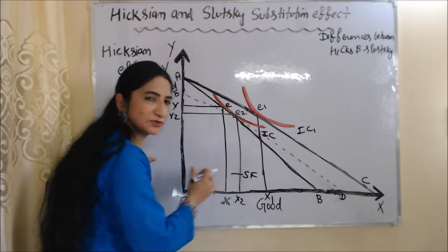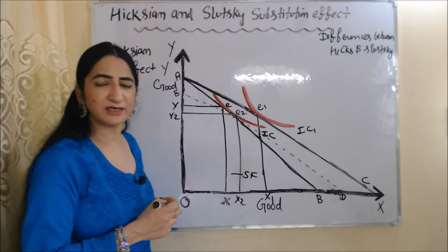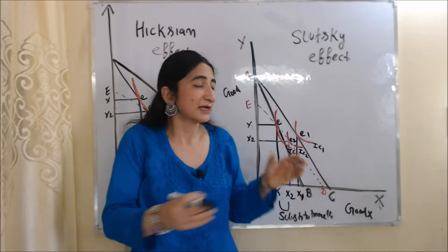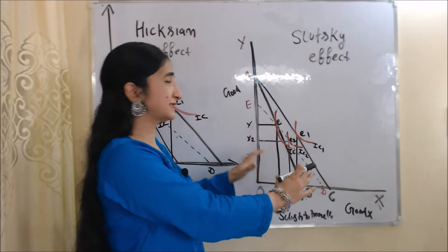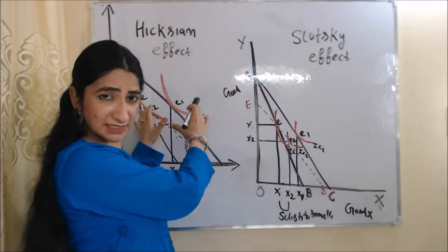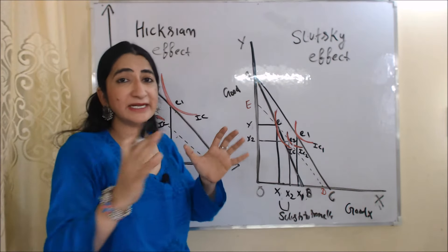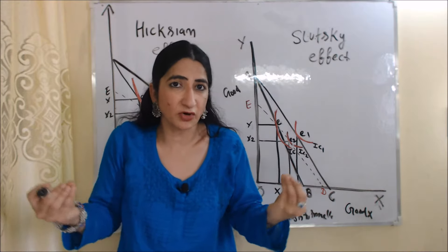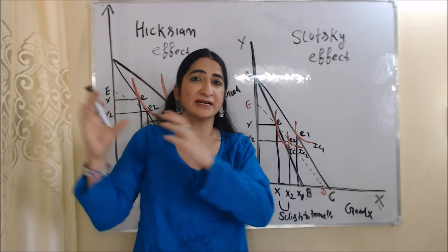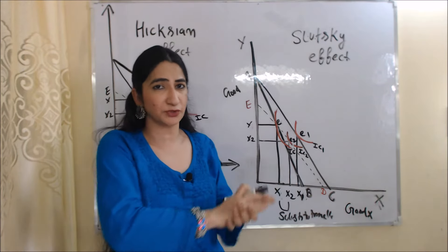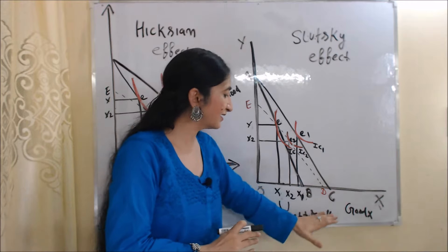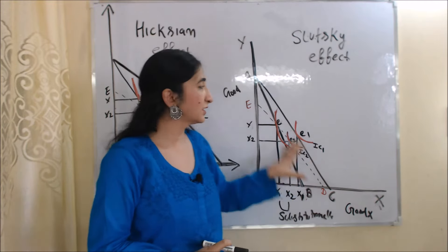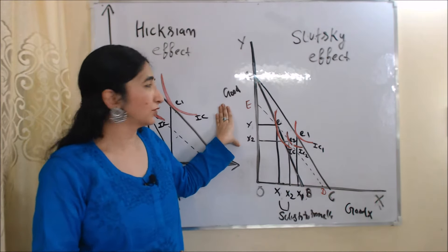Now we will see the Slutsky substitution effect. The Slutsky substitution effect is similar to the Hicksian effect, but it has some differences. We will basically talk about the differences between Hicksian and Slutsky substitution effect. In this diagram, on the X-axis we have X good and on the Y-axis we have Y good.